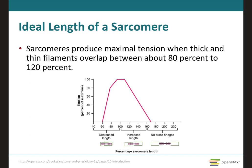At the ideal sarcomere length, the sarcomeres will produce maximal tension to allow for shortening and contraction of the muscle. Sarcomeres produce maximal tension when the thick and thin filaments overlap at about 80 to 120 percent, so that range represents the optimal or ideal length of a sarcomere.